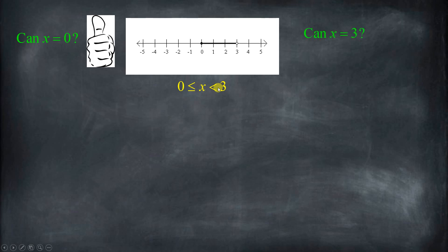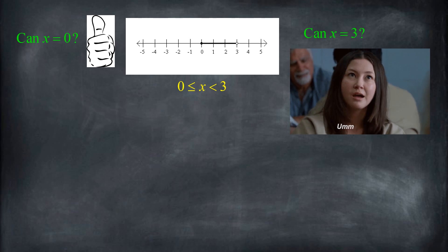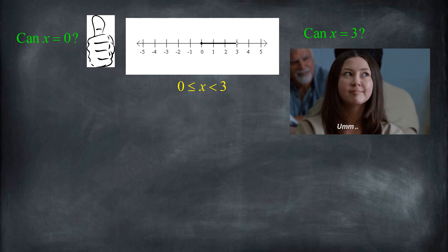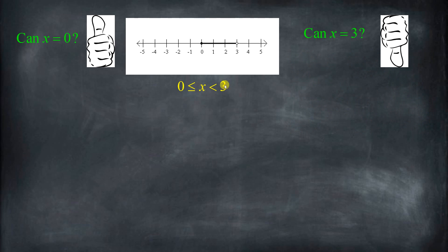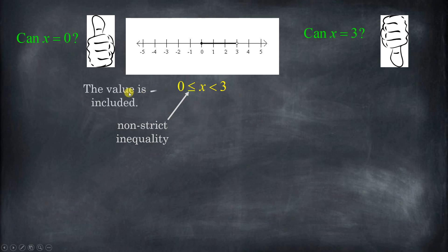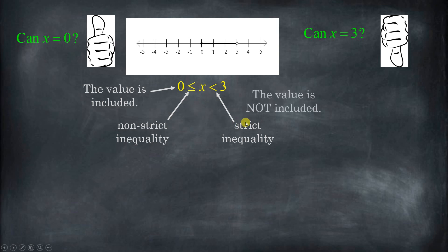What about the other endpoint — 3? Can x equal 3? No, it can't, because 3 is not less than 3. The 0 works because 0 is less than or equal to 0. This symbol is a non-strict inequality, which means the value associated with it is included. Whereas less than and greater than are strict inequalities, and the value associated with those is not included.